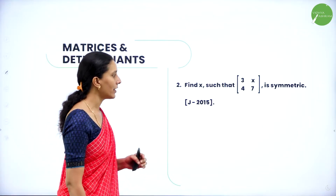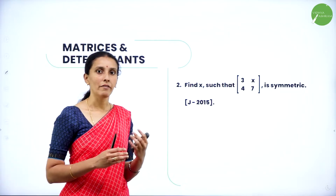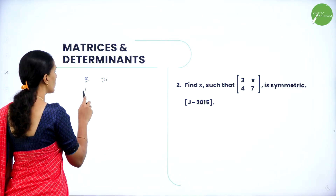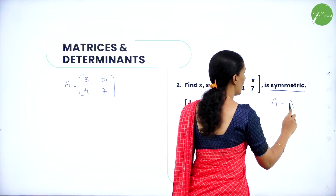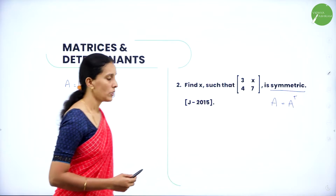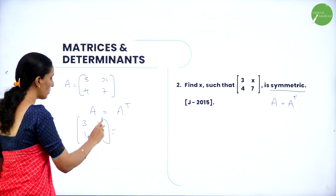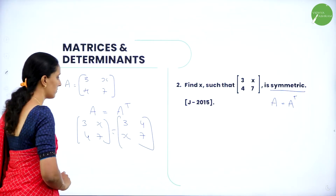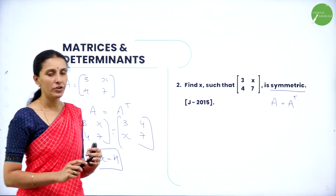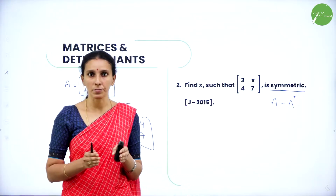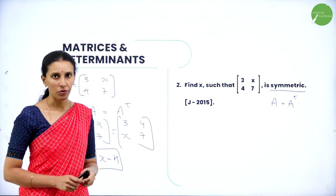Next: find x such that the matrix [3, x; 4, 7] is symmetric. It was asked in July 2015. We know that a symmetric matrix means when you transpose it, the value will be the same. So if A = [3, x; 4, 7], symmetric means A transpose must equal A. Setting A equal to its transpose [3, 4; x, 7], and comparing corresponding elements, we get x = 4. Symmetric means A equals A transpose, and by equating corresponding elements, x equals 4.